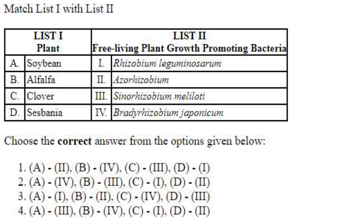Matching plants with free-living plant growth-promoting bacteria: soybean — Bradyrhizobium japonicum (A4); alfalfa — Sinorhizobium meliloti (B); clover — Rhizobium leguminosarum (C); sesbania — Azorhizobium (D). The answer is option 2.